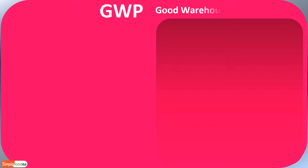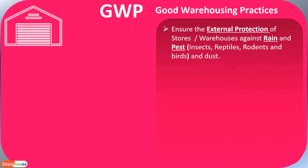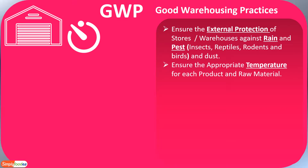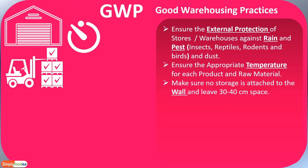Let's go with GWP or good warehousing practices. It is used to ensure the external protection of stores and warehouses against rain, pests, insects, reptiles, rodents, birds, and dust. It also ensures the appropriate temperature for each product and raw material, and that nothing is attached to the wall — leaving at least 30 to 40 centimeters of space between any pallet of finished product or raw material and the wall.